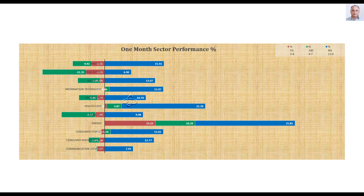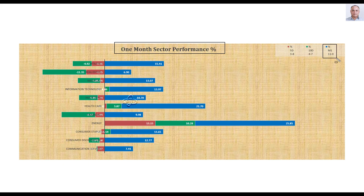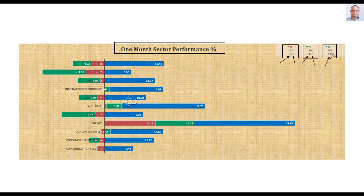After the commodities I continue with sector level analysis. This graph represents one month sector performance. Over one month, all sectors went up. Over the last 10 days it weakened — 4 sectors were up and 7 were down, more bearish than bullish. And then this week it weakened a little further — 3 sectors went up and 8 went down. In the beginning it was bullish, then it weakened, and this week it weakened further.